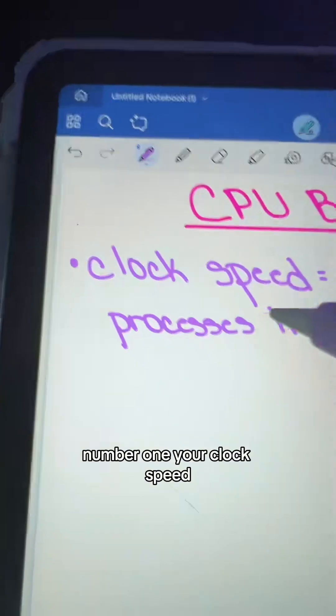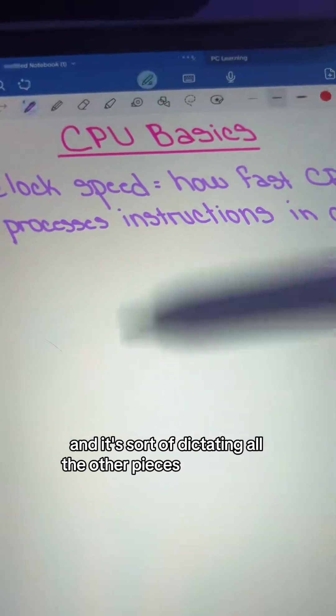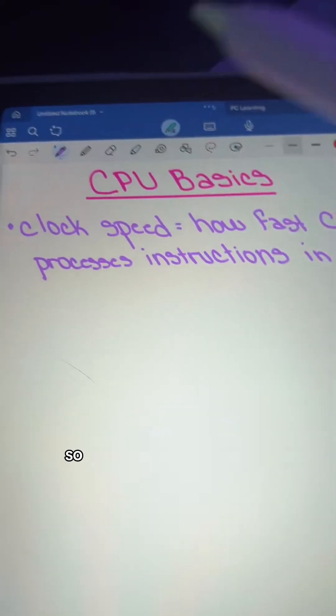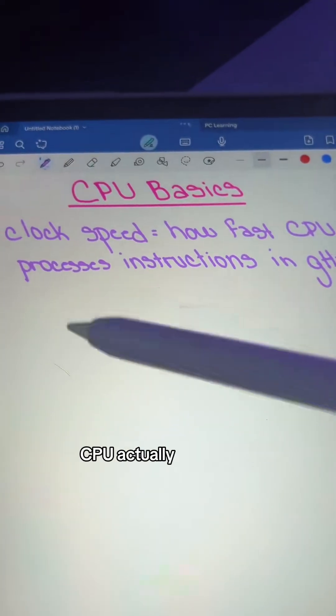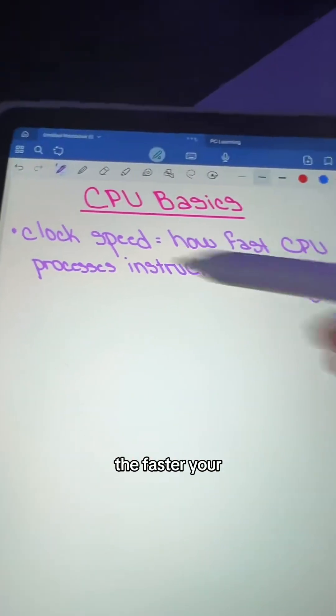Number one, your clock speed. Remember your CPU is like your PC's brain and it's sort of dictating all the other pieces and parts of what to do. So the clock speed refers to how fast your CPU actually processes instructions. This is measured in gigahertz. So obviously the higher the gigahertz, the faster your CPU works.